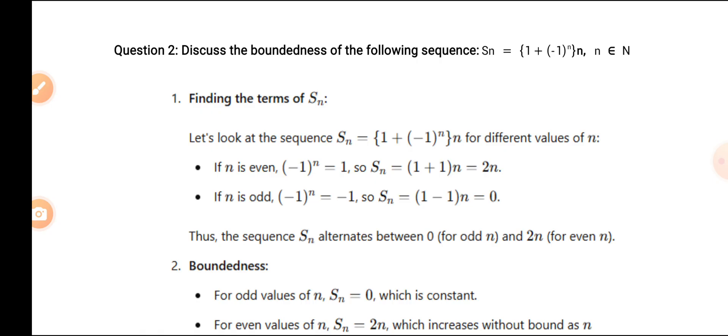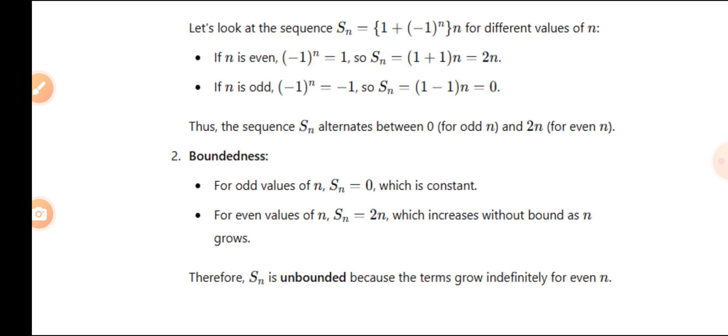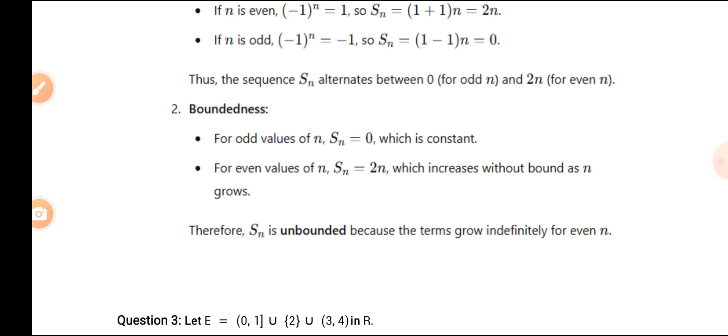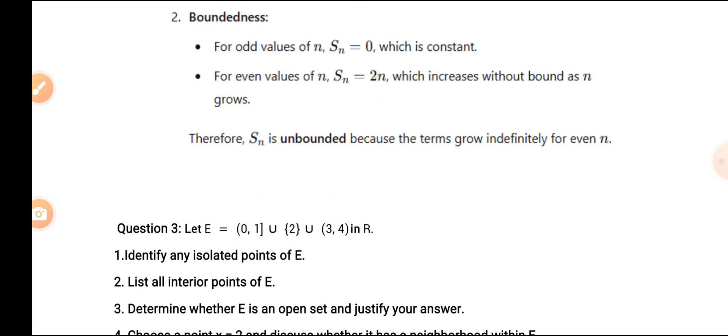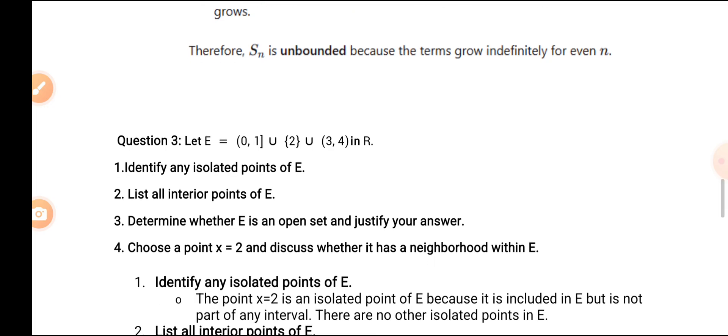Question No. 2: discuss the boundedness of the sequence Sn = 1 + (-1)^n, where n belongs to the natural numbers. If n is even, (-1)^n = 1, so Sn = 1+1 = 2. If n is odd, (-1)^n = -1, so Sn = 1+(-1) = 0. The sequence alternates between 0 and 2. For odd values Sn = 0 (constant), but for even values Sn = 2 which increases without bound as n grows. Therefore Sn is unbounded because the terms grow indefinitely for even n.